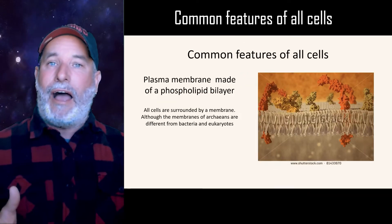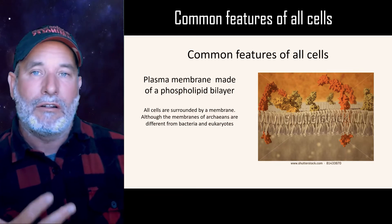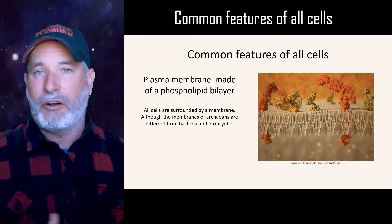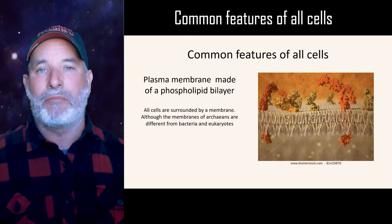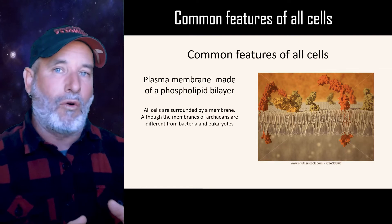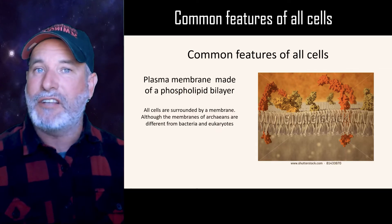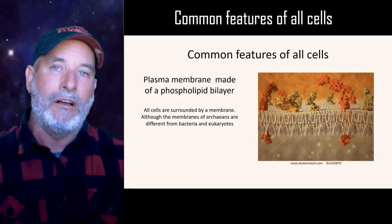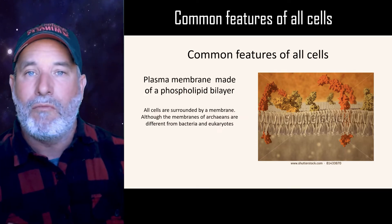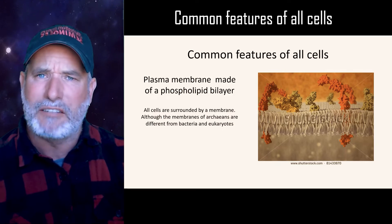As a result of sharing common ancestry, you can imagine that all life shares certain features in common. One of them is plasma membranes. These form a barrier around a cell and have selective permeability that regulates what comes in and out of the cell. So the interior of a cell is different from its exterior. All cells are surrounded by some type of plasma membrane.